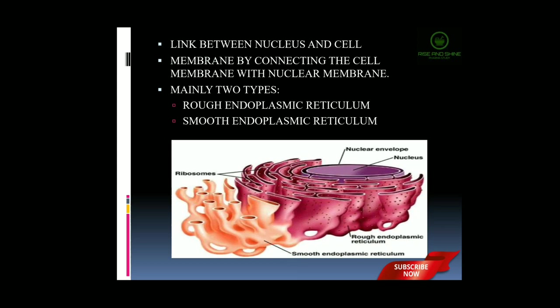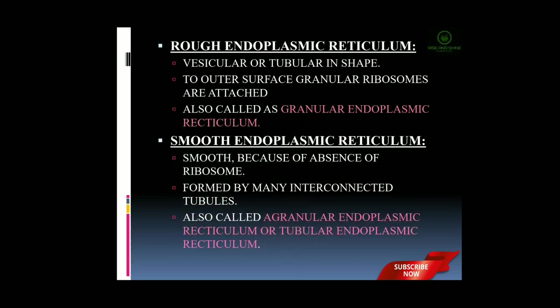Mainly, the endoplasmic reticulum is of two types. One is a rough endoplasmic reticulum and another one is a smooth endoplasmic reticulum. The rough endoplasmic reticulum is vesicular or tubular in shape. The outer surface consists of granular ribosomes which are superficially attached to it. These are bead-like shapes which look like round ball appearances. Due to the presence of granular ribosomes, the rough endoplasmic reticulum is also called the granular endoplasmic reticulum.